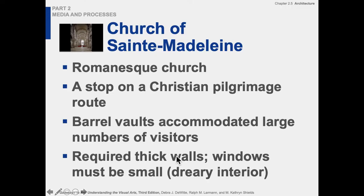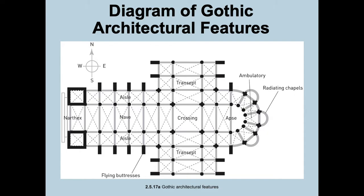We go even further when we get into the Gothic. Gothic architecture has several different changes within its features. One of which is this cross design — that's the floor plan. You can see how it imitates a cross. The doorway, the entrance, is always oriented toward the west. And the east — that's also what we call the orientation — is oriented toward the east. The east is the orient; the west is the occident. That is how the church would normally be laid out. Then we have radiating chapels here.